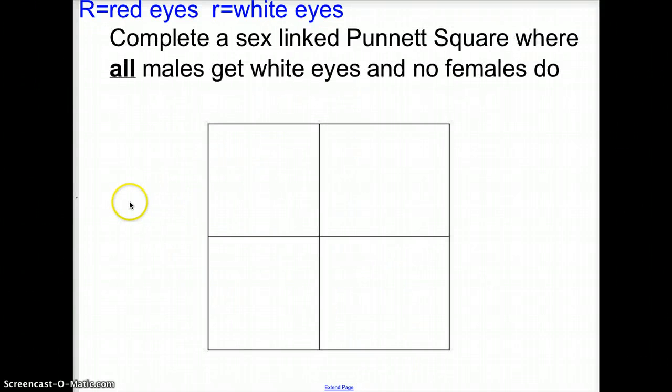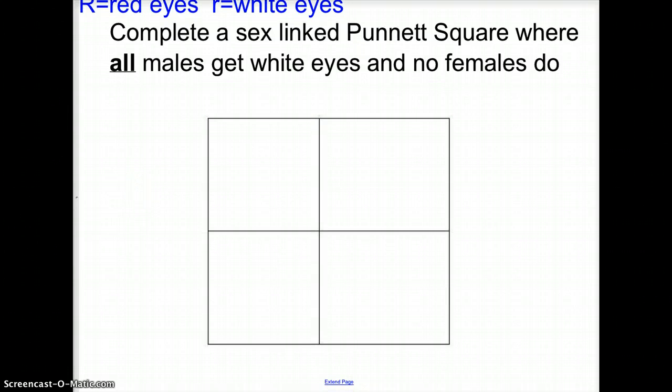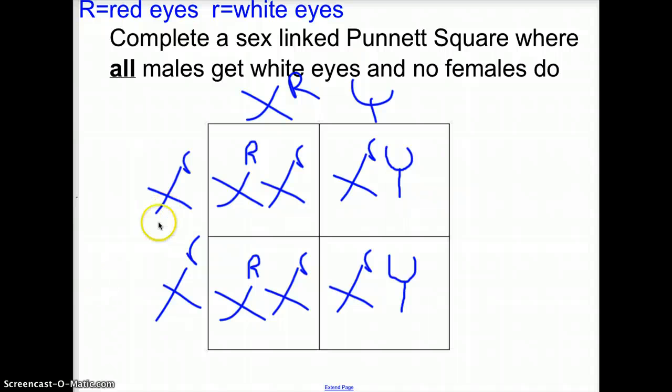And if I asked you a different question, it said now, is there a possibility you can have a Punnett square where all the males get white eyes but no females do? I'm going to tell you right now there is a possibility and it's hard. You have to think kind of backwards here. But if the female was this genotype and the male was this genotype, if you look at this, 100% of the females would have red eyes and 100% of the males would have white eyes.